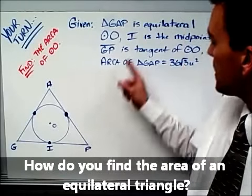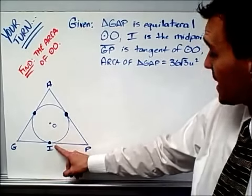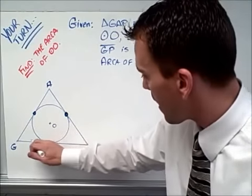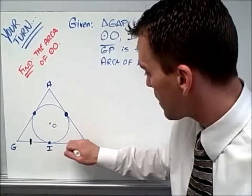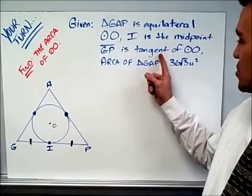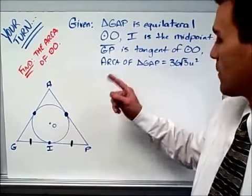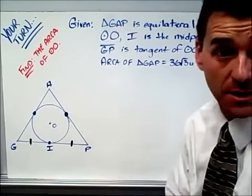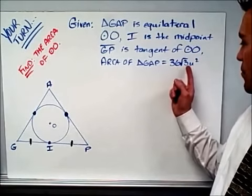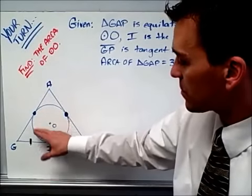The given information: triangle GAP is an equilateral triangle. Circle O, of course. I, that point I right there, is the midpoint of segment GP. So I, capital I. So that's the midpoint. So those two are equal. That's important. And GP is the tangent of circle O. So GP is the tangent. So that right there, that's the point of contact. That's important. And of course, it's because it's in the given information. And the last thing that you're going to need to use for sure is that the area of triangle GAP is actually 36 root 3 units squared. So again, the question is to find the area of the circle itself.